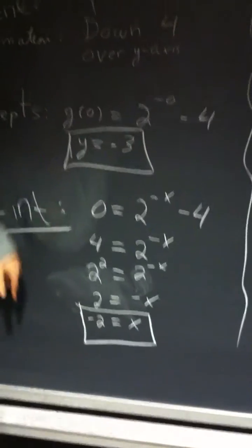And these are my intercepts, y and x. And your asymptote is just going to go down 4.